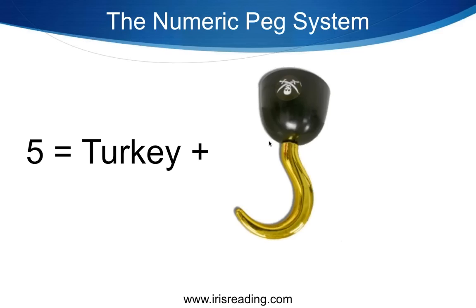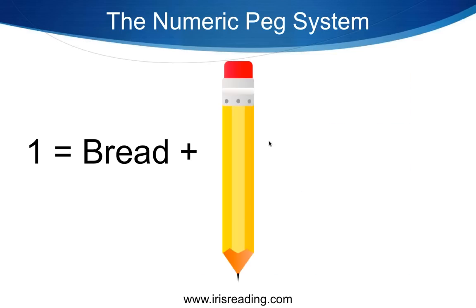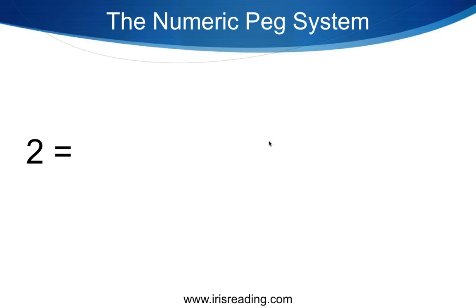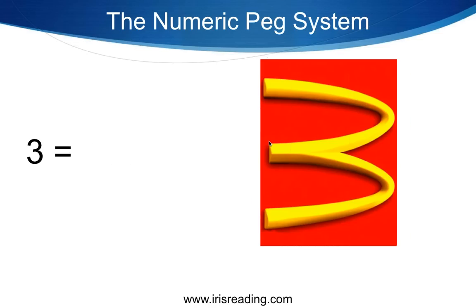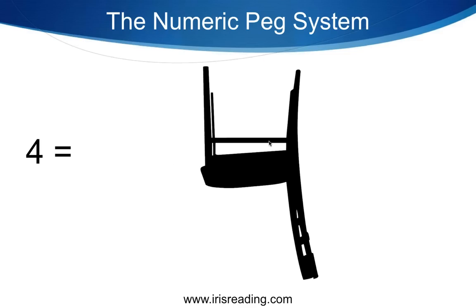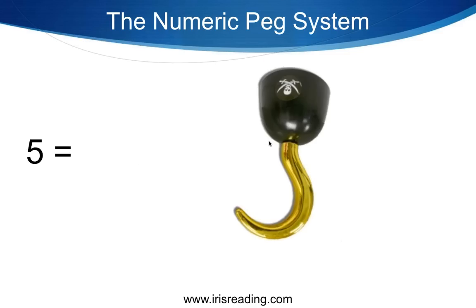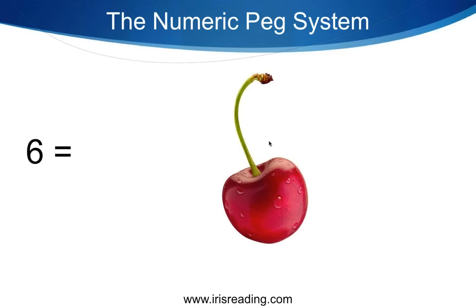Quick recap of one through five: one was pencil with bread on top; two was swan swimming in a lake of milk; three was McDonald's Big Mac with thick tomato slices; four was a chair with soda bottle legs; five was the hook reminding us of the pirate carving the turkey on Thanksgiving. Now we move on to number six — a cherry.